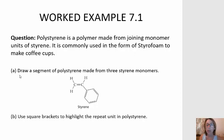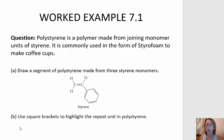In this example, we are asked to draw a segment of polystyrene made from three styrene monomers, and then we're asked to use square brackets to highlight the repeat unit in polystyrene.